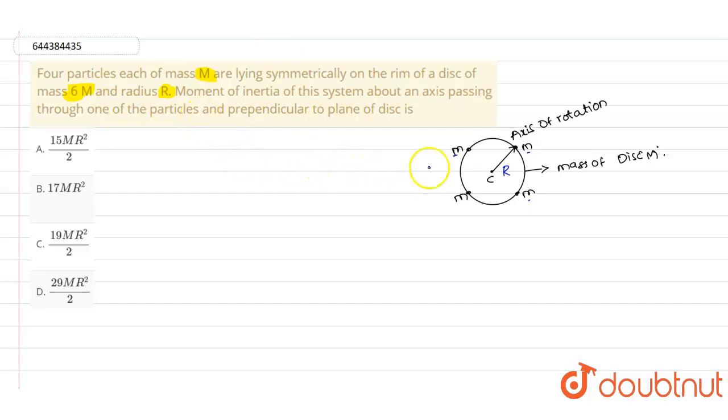So according to the given question, we have four different particles lying on the rim of the disc. This small m represents these particles and capital R is the radius. As the axis of rotation is passing through one of the particles and perpendicular to the plane of the disc...